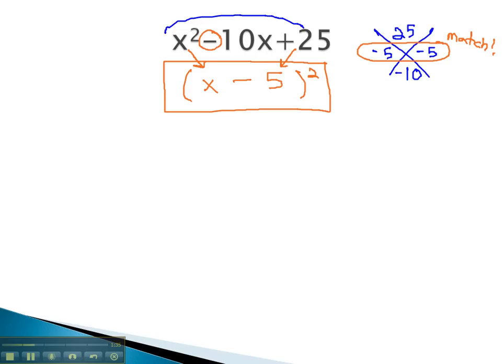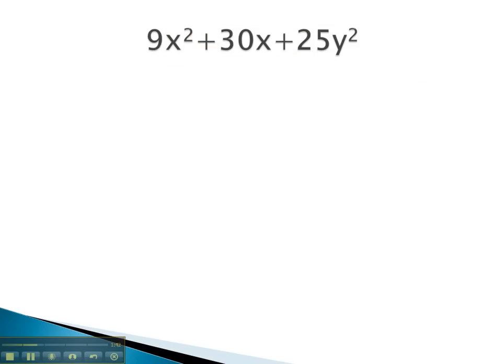Let's take a look at another example where we find the numbers from the AC method match, telling us we have a perfect square. In this problem, using the AC method, we would be multiplying 9 times 25, or 225, and adding to 30.